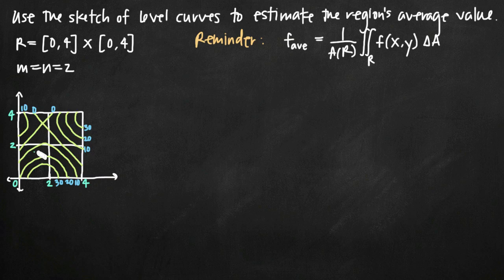In this particular case, our rectangles are squares because when we have a 4 by 4 region and we're dividing it into two each way, that means we're going to have 2 by 2 squares.